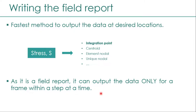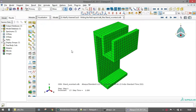Going forward, we will first see how to use the field report in the Abaqus GUI, then create a script from it, and understand what methods we need in order to use this efficiently in the automation process. Now let's look at the data output options available in Abaqus CAE.